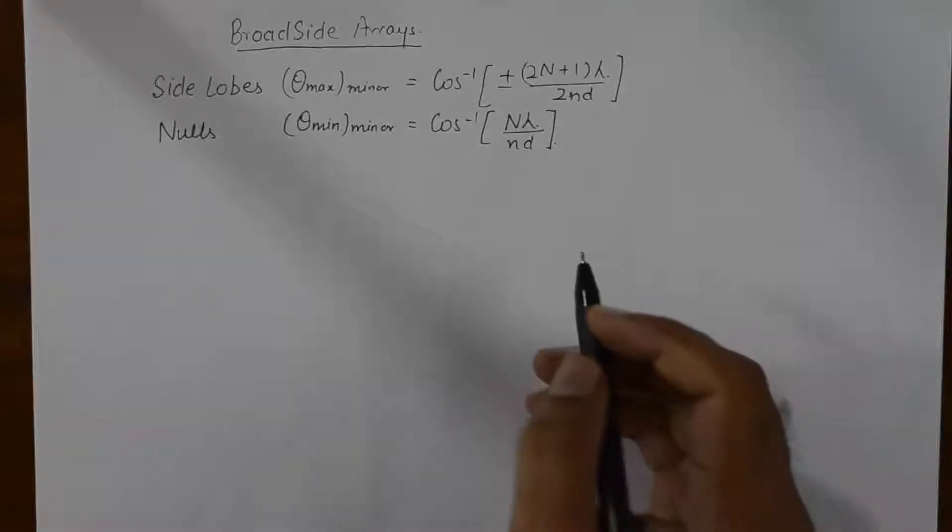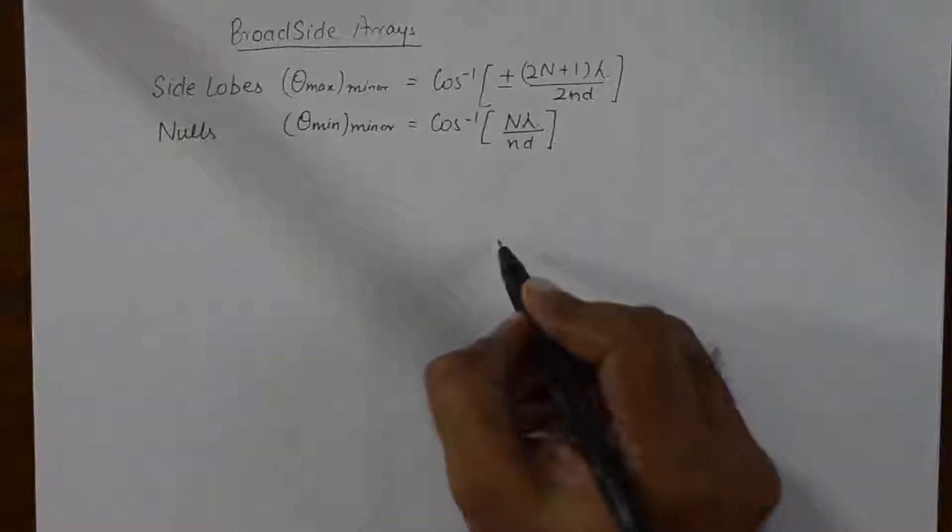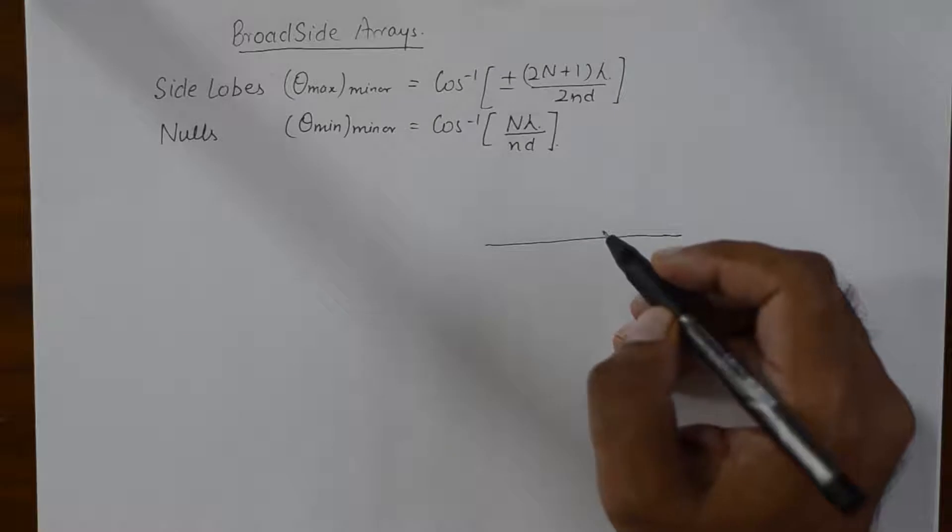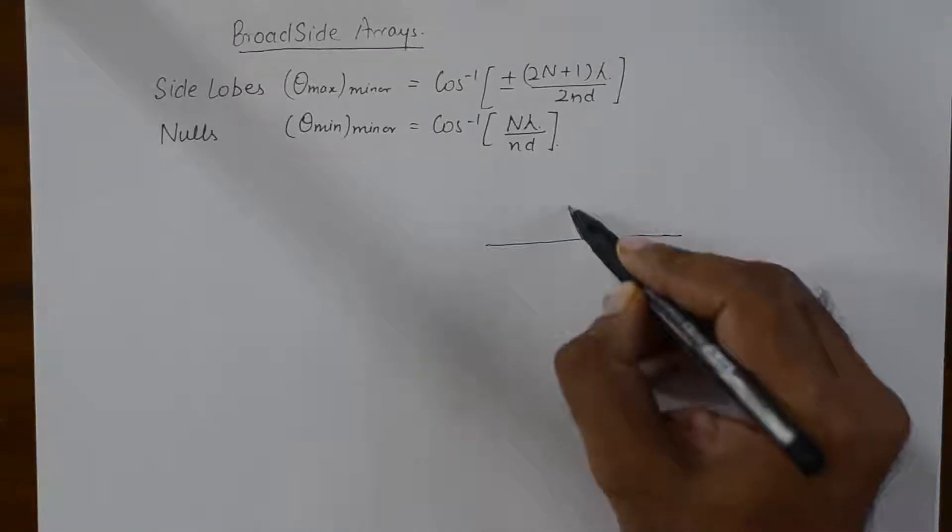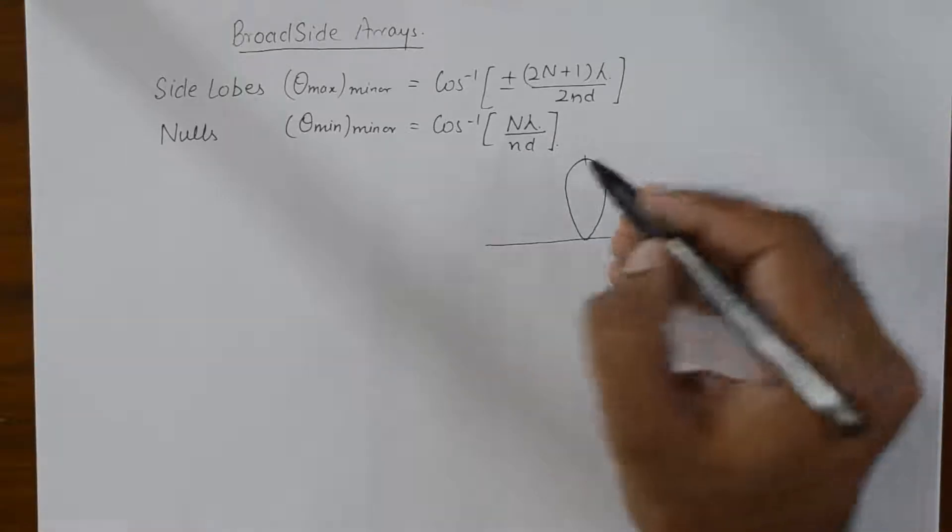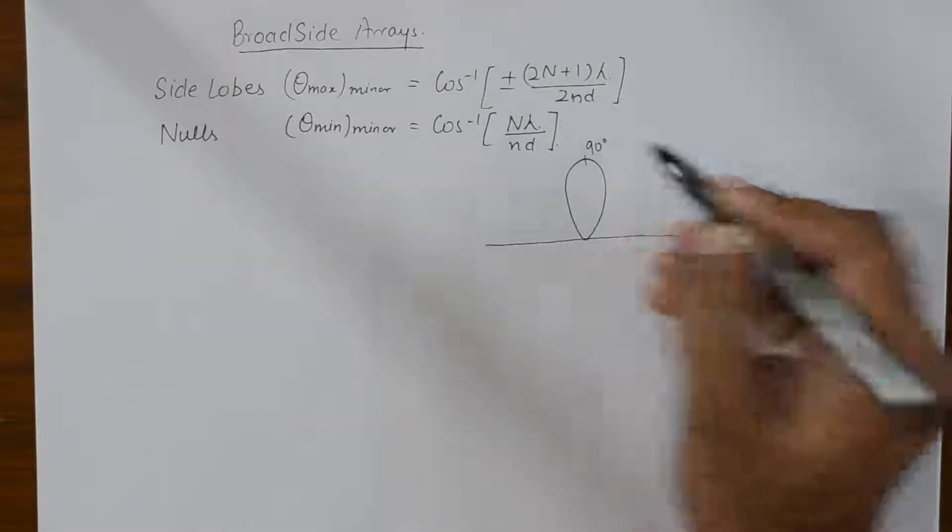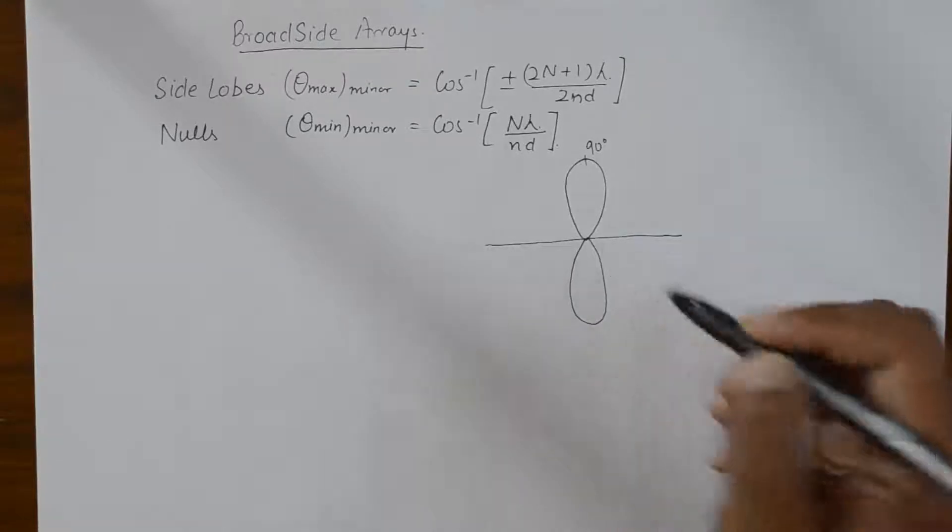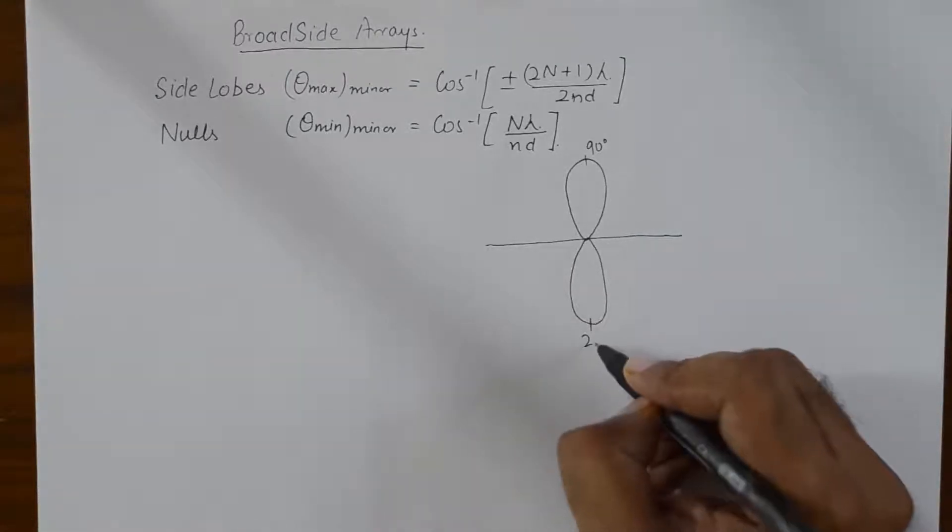That goes to show that if we plot the radiation pattern, one major lobe will be created at 90 degrees and another major lobe will be created at 270 degrees.